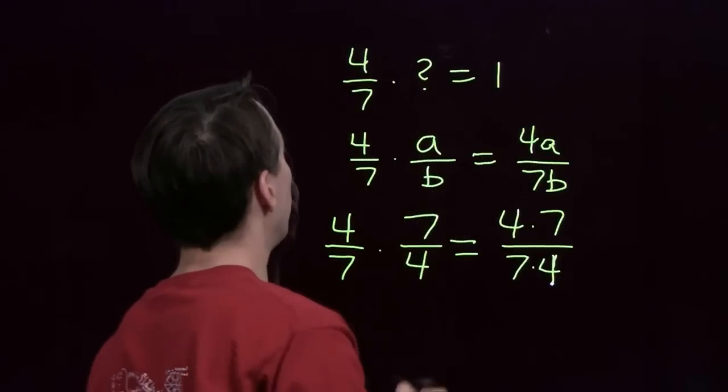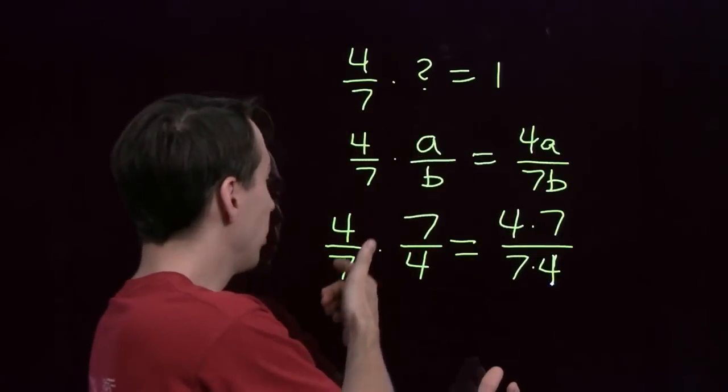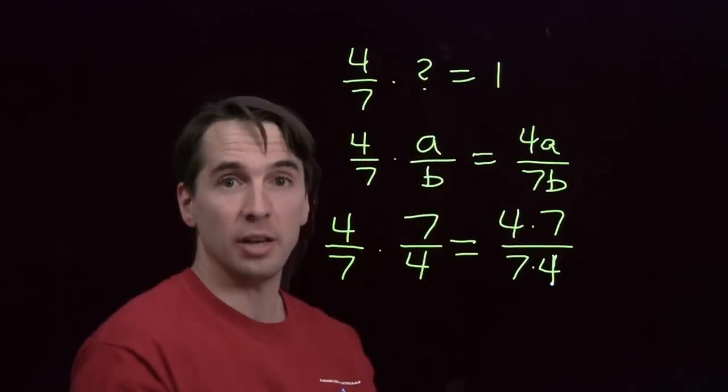We find the reciprocal of 4/7, find the reciprocal of any fraction just by taking the fraction and flipping it over. Reciprocal of 4/7 is just 7/4.